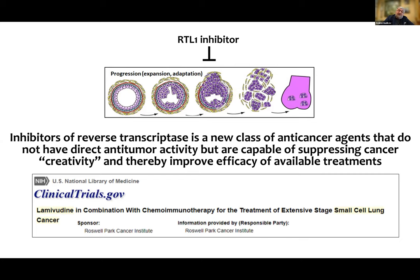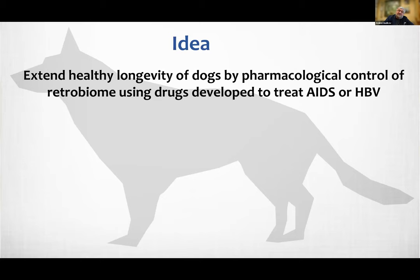Based on this result, we recently started a clinical trial at Roswell Park, sponsored by a company we started named Genome Protection, in which people with small cell lung cancer receive lamivudine — a reverse transcriptase inhibitor — on top of standard of care, with the hope of prolonging their progression-free survival.